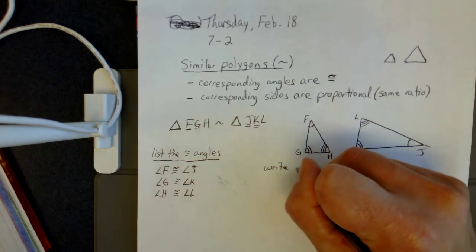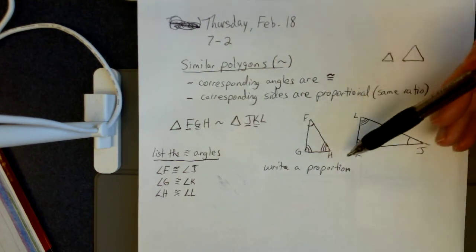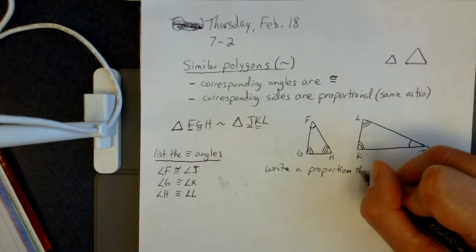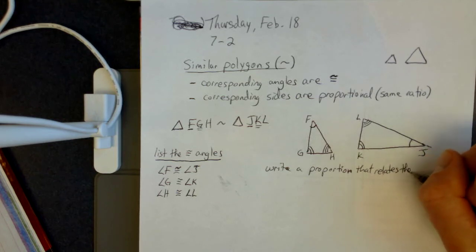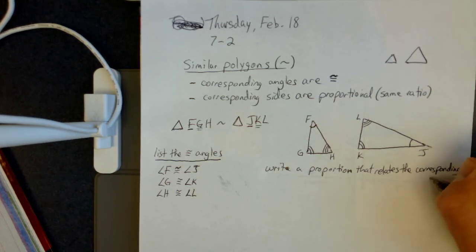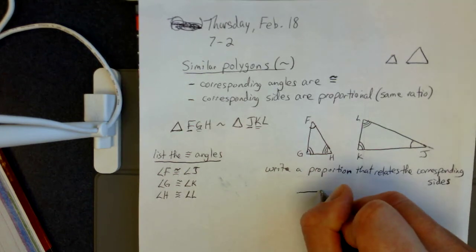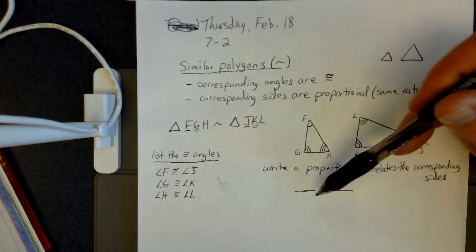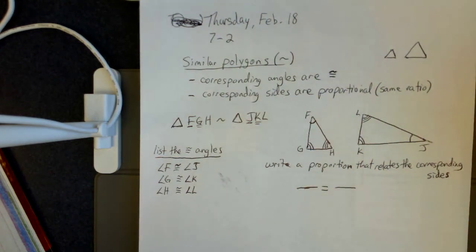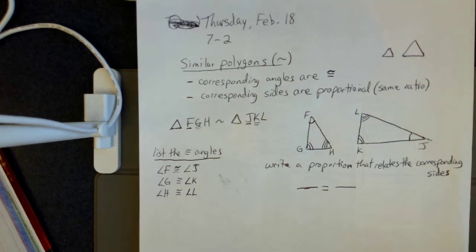The second thing they're going to have us do is write a proportion. We said that corresponding sides are going to be proportional, so we're going to write a proportion relating the corresponding sides. What we're used to seeing is a proportion as two fractions equal to each other. We're going to have three sets of corresponding sides, so we'll end up making this a proportion with three fractions. I'm going to show you both ways — using the order of letters or matching them up using the angle marks on our picture.